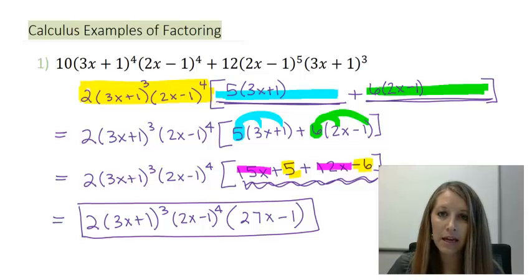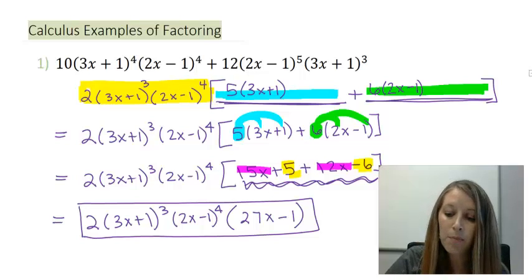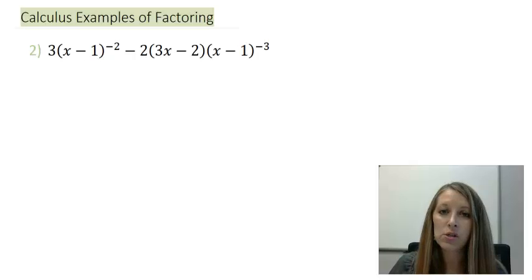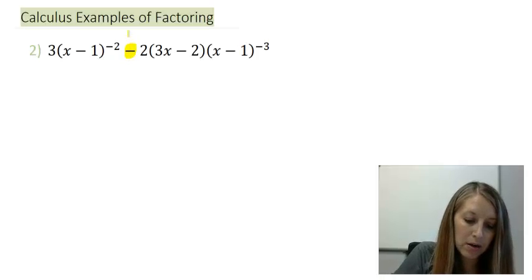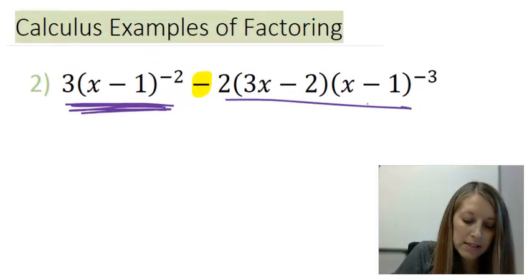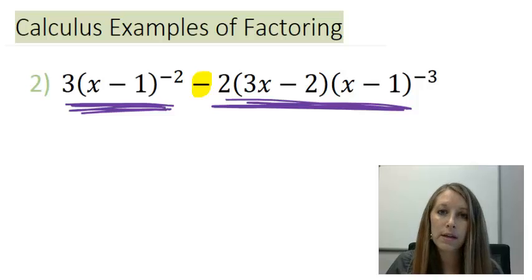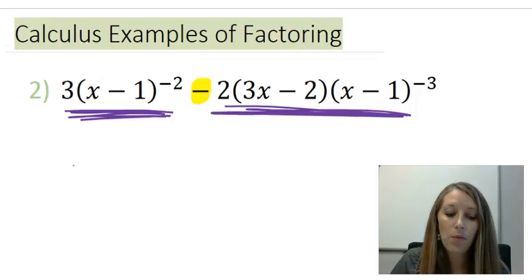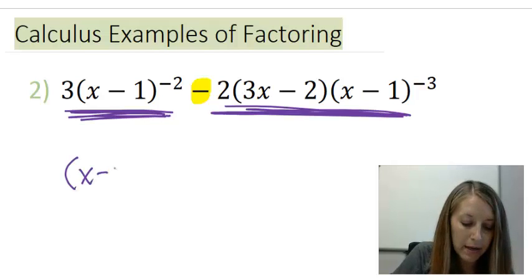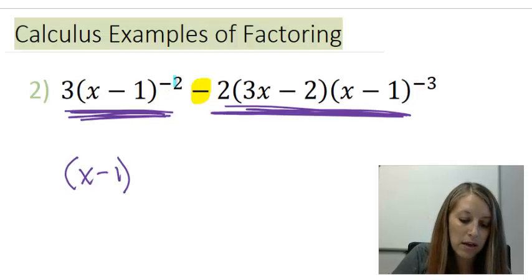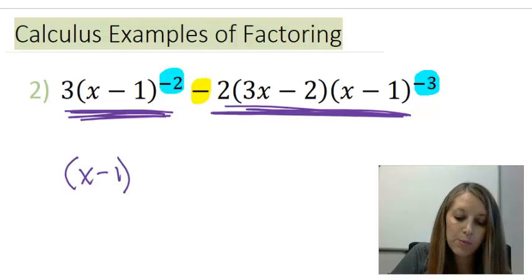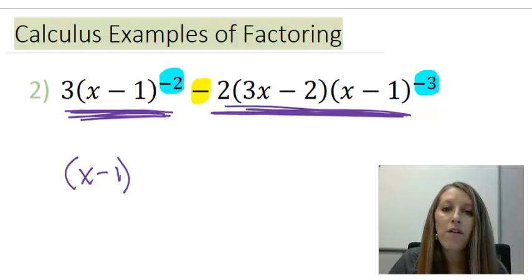That's my first calculus example. Let me show you one more which is very similar but has a greater difficulty level. Again we're using the common factor technique, so I want to pick out how many terms I have. The separating piece is the minus sign, so I have a term here and a second term there — I just need to figure out what's in common between them. The only thing in common is the set of parentheses of x minus 1. But the tricky part is: how many do I factor out? Do I factor out the negative 2 exponent or the negative 3 exponent?